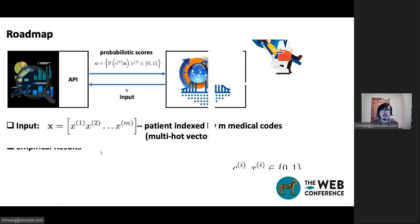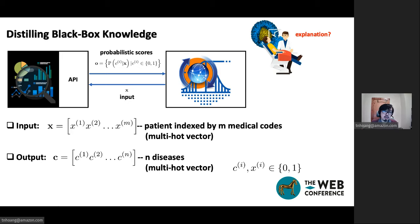For this part, we will first describe the input-output of our system. Here, each local institution will send a patient profile to the cloud model as an input. And the input is basically a multi-hot vector indexed by the medical code that comprise the patient's medical profile. And the output here is a set of predictive scores, one per disease. And we assume that they are NDC.